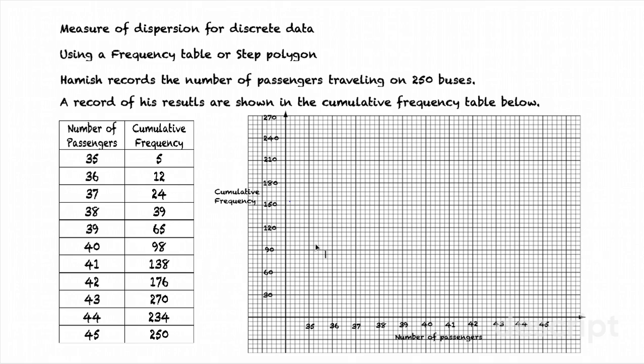We're going to draw the step polygon. I've already set up the axes. Along the bottom axis, I have the number of passengers. And on the vertical axis, I have the cumulative frequency. I've set it up with a slightly unusual scale going up in steps of 30. And that's because that gives me 270. And I need to go up to a total of 250.